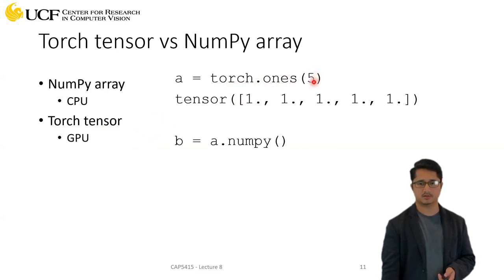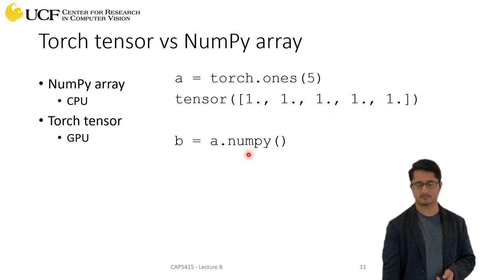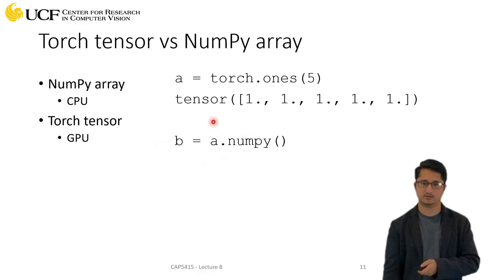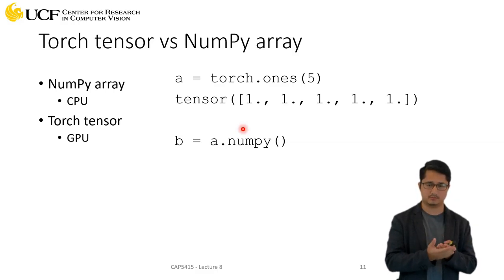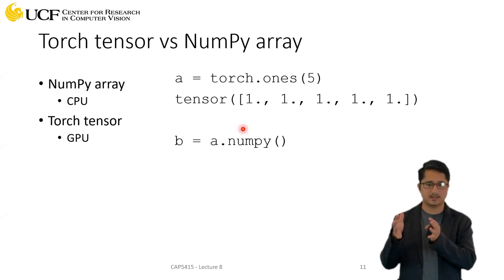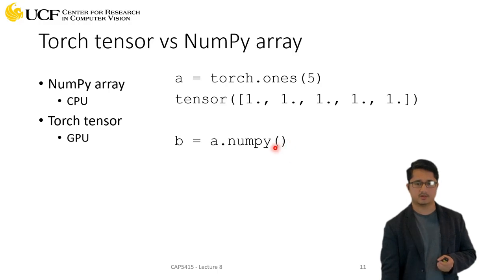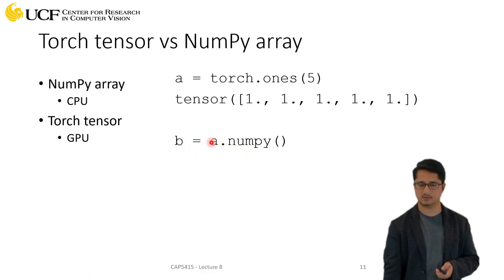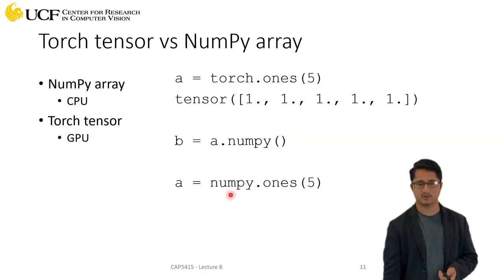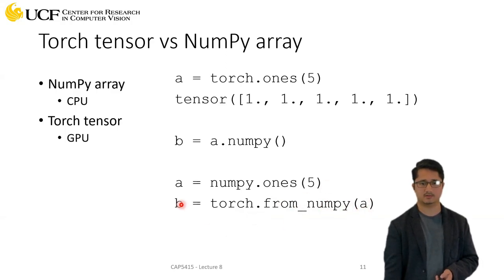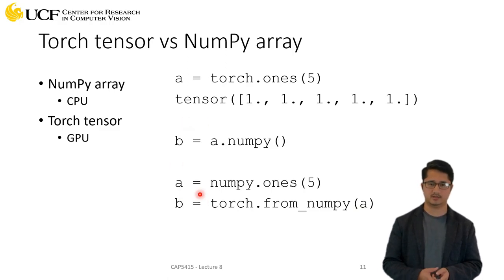torch.ones(5) gives you a one-dimensional vector of five ones. You can convert a NumPy array to a PyTorch tensor — this is handy when you want to work on CPU with NumPy and then transfer to PyTorch tensors for training. To go from a PyTorch tensor to a NumPy array, call tensor.numpy(). To go the other way, call torch.from_numpy() passing the NumPy array.